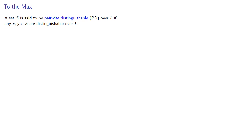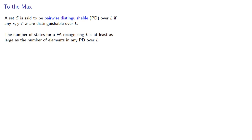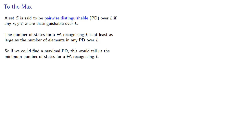A set S is said to be pairwise distinguishable over a language if any X and Y in S are distinguishable over L. The number of states for a finite automaton recognizing L is at least as large as the number of elements in any pairwise distinguishable set, so if we could find a maximal pairwise distinguishable set, this would tell us the minimum number of states for a finite automaton recognizing our language.